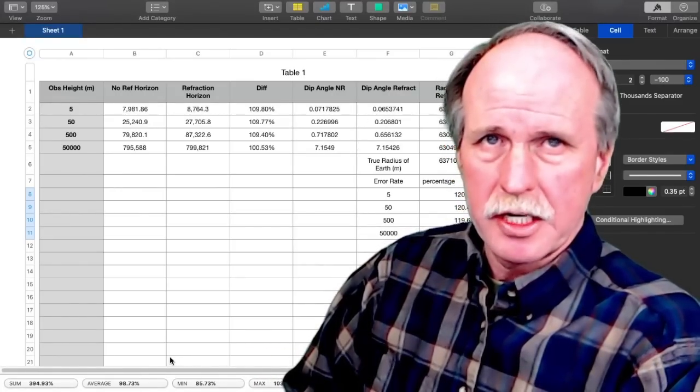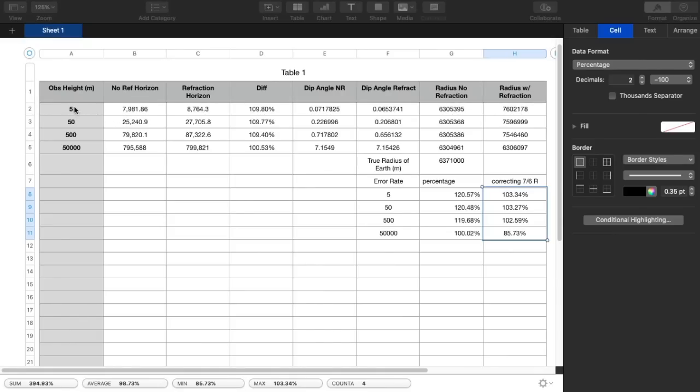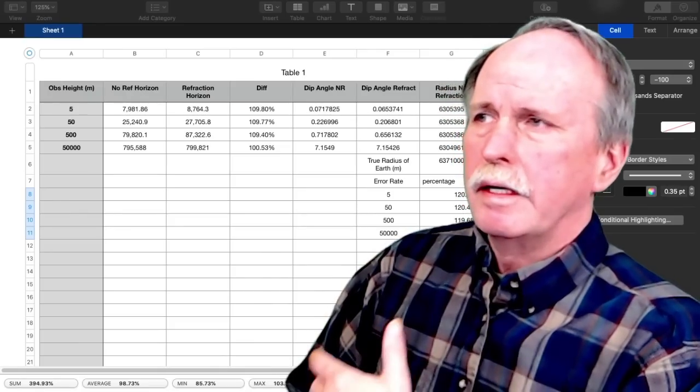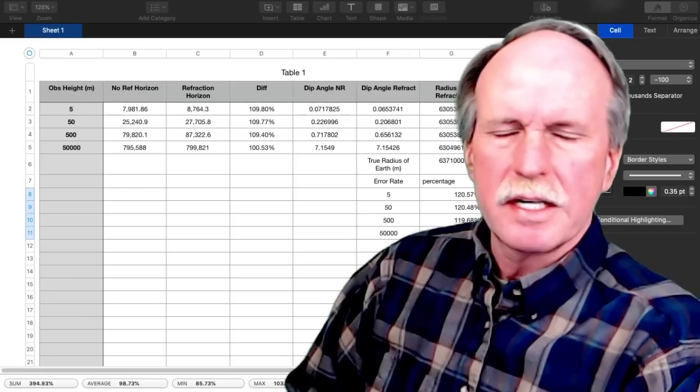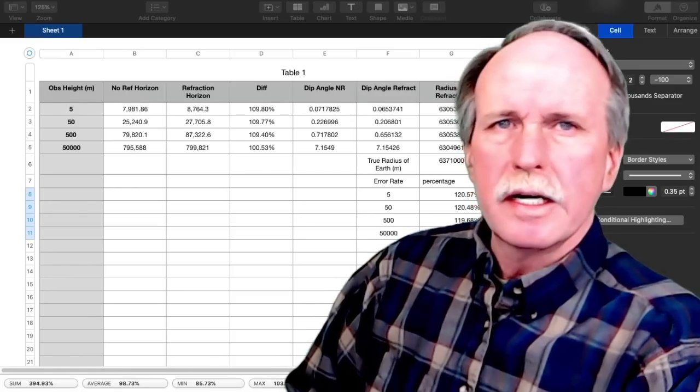I'm going to pop out real quick so we can go over these numbers. Right here we have our 5 meter observation height. Here's the reference to the horizon with no refraction. And here's the horizon with refraction. And as you can see, it's about 9.8% greater with refraction. Here's our dip angle with no refraction. And our dip angle with refraction. Here's the radius of the earth with no refraction. And here's the radius of the earth with refraction. And I did that for 5 meters, 50 meters, and 500 meters. It should be noted that Al-Biruni did this at about 475 meters. And the main surveyor did it at less than 30 meters.